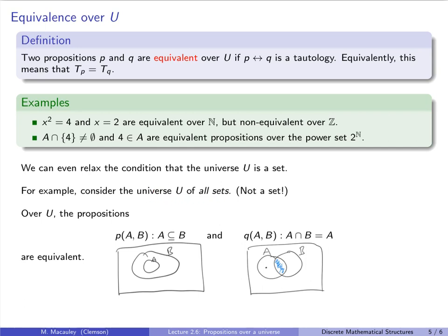As an explicit example over the universe of all sets with two set variables A and B: P is true if and only if A ⊆ B, and Q is true if and only if A ∩ B = A. These are equivalent — if A ⊆ B then every element of A is in B so A ∩ B = A, and conversely, if there are elements of A not in B then A ∩ B ≠ A. But again, this is a convincing argument, not a formal proof.